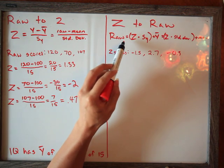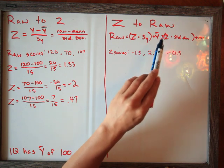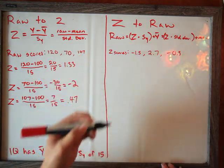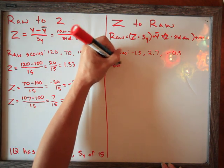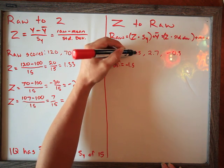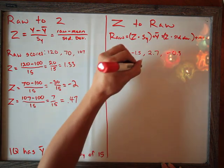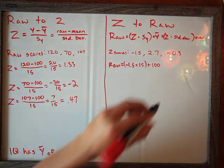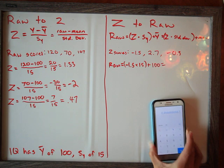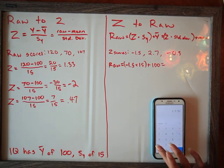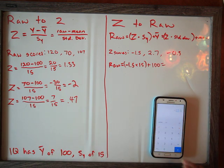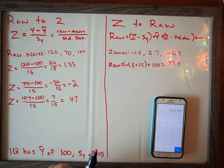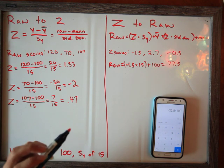Here we have our formula. To find the raw score, you do your z-score times the standard deviation plus the mean. So here we have our three z-scores to convert. For the first: negative 1.5, which is our z-score, times the standard deviation of 15, plus 100, which is our mean. Negative 1.5 times 15 is negative 22.5, plus 100 gives us a raw score of 77.5. Somebody with a z-score of negative 1.5 in this IQ data set would have a raw IQ score of 77.5.